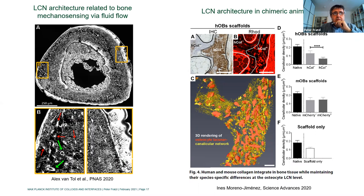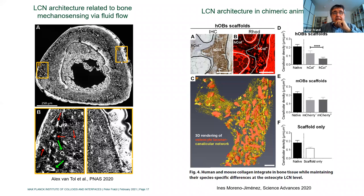This kind of information will help us understand the function of this network, which serves multiple roles including transport of mineral precursors and mechanosensing. In a recent paper by Alex van Tol, imaging the network and calculating the fluid flow induced by walking — which puts pressure on bones, driving interstitial fluid through the channels — where fluid flow is fastest, the fastest bone apposition is also observed. The network architecture and channel diameter seem to correlate strongly with bone apposition.